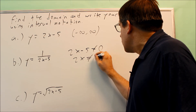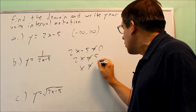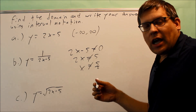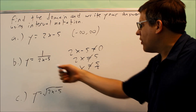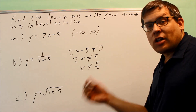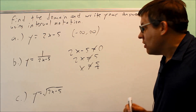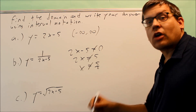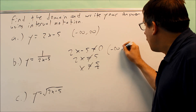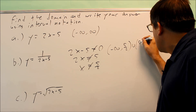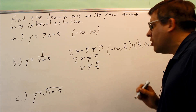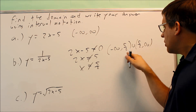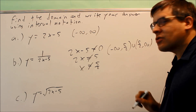Solving gives 2x is not equal to 5, so x is not equal to 5/2. Any number is okay except for 5/2. If we put 5/2 in, it causes the denominator to be 0, so it's not allowed. The answer in interval notation is negative infinity to 5/2, union 5/2 to infinity — including all numbers except 5/2, which is why we use parentheses there.